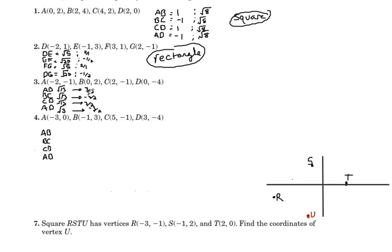The slopes are opposites. They are not reciprocals. So that we definitely don't have perpendicularity. All the distances are the same. Square root of 13 across the board. So this would define for us a rhombus.